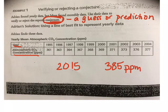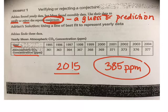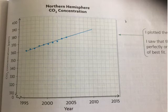We need to use their data to see if the data verifies or rejects their prediction. Raise your head if you think that by 2015 it's probably going to be around 385 parts per million. We have a graph here that shows the data and they've drawn a line of best fit.